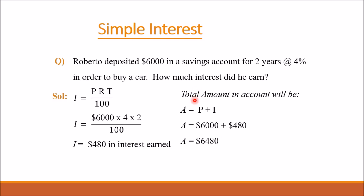To find the total amount in the account, we add the interest amount to the principal amount. This gives us the total amount Roberto would have after 2 years in his savings account: $6000 plus $480 equals $6480.